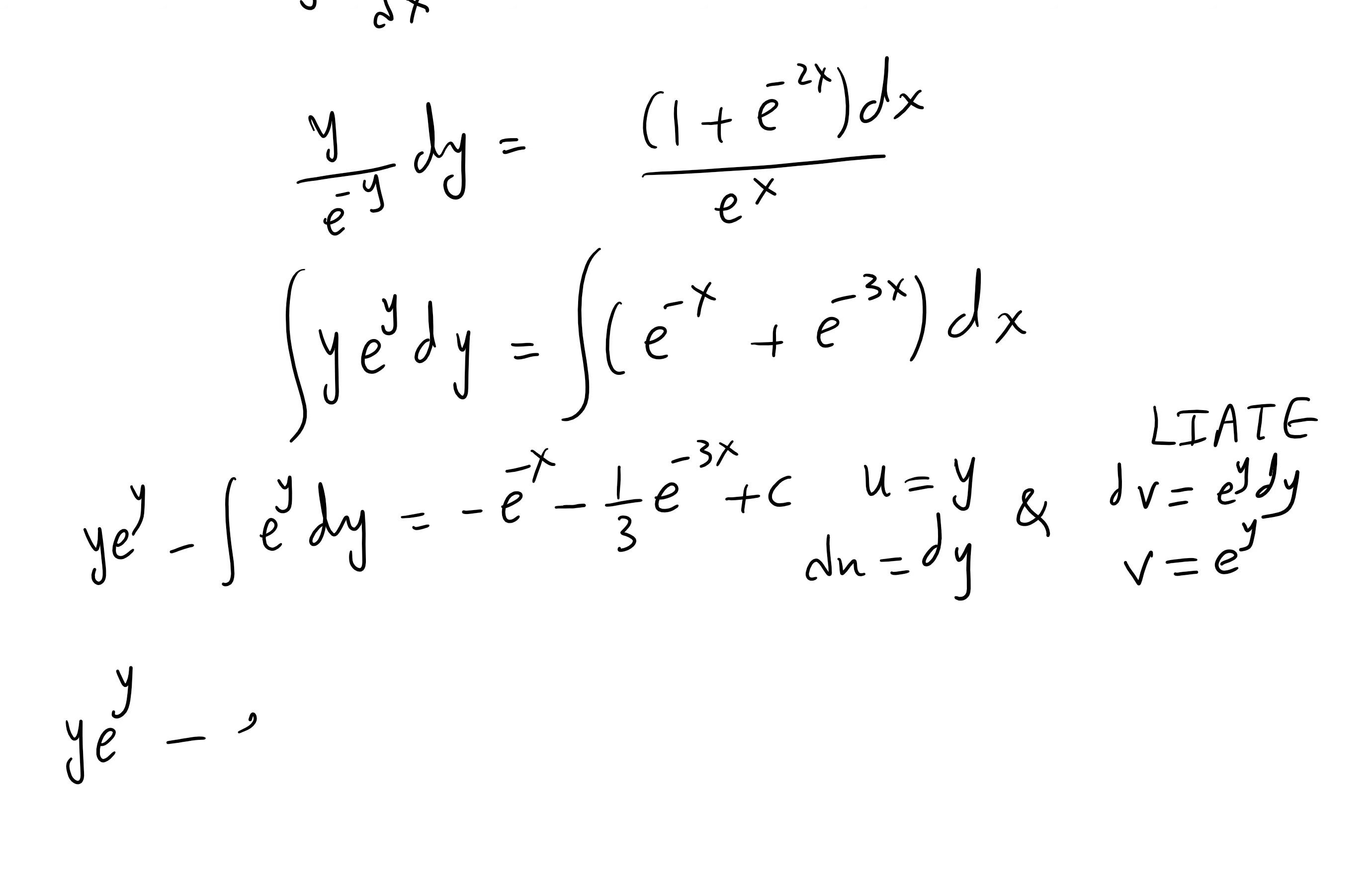y times e^y minus e^y. This stays the same, no negative exponents. And you can leave it like that.